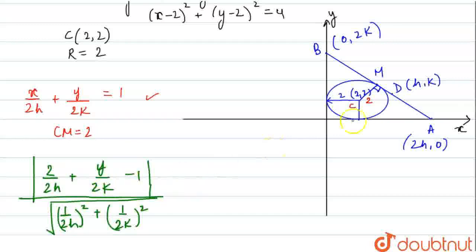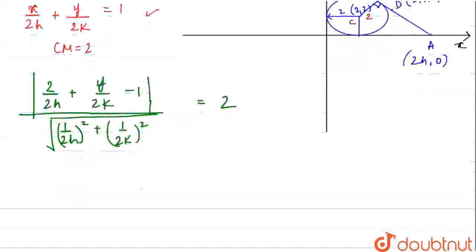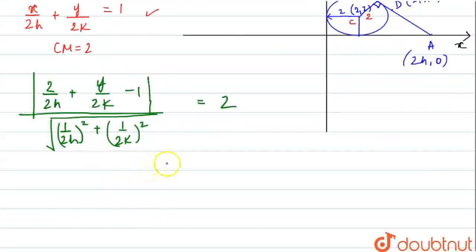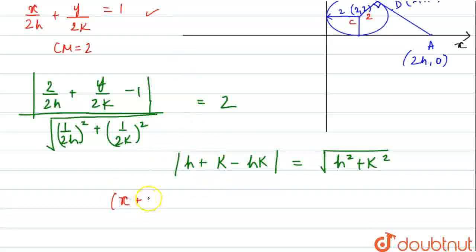After solving, this equation will become: mod of (H plus K minus HK) equals under root of (H squared plus K squared). Now, we will remove this mod and we will replace H, K by X, Y.